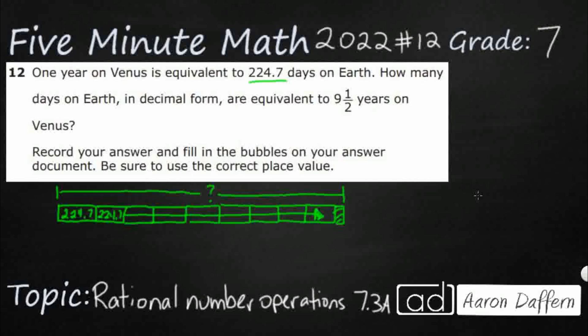So it seems to me like we've got a multiplication problem because I'm looking at 9 and a half groups of 224.7. Or I can just add up 224.7 nine times, but then I'm still going to have to figure out what half of that is. So multiplication is going to probably be the simpler operation. So 224.7 times 9 and a half.